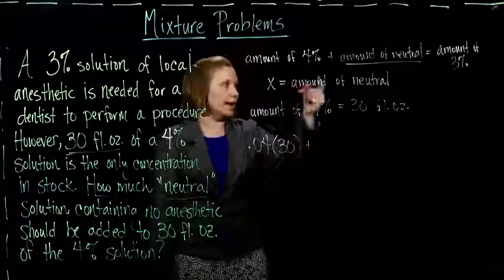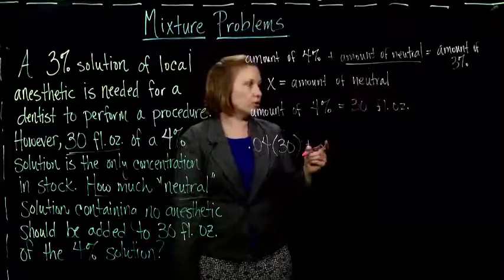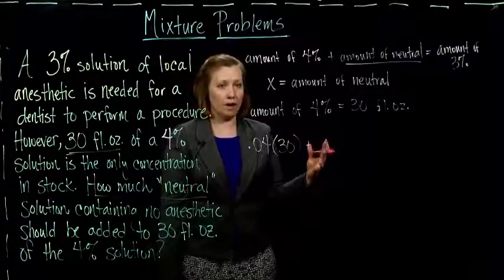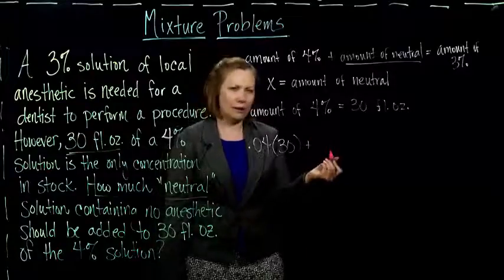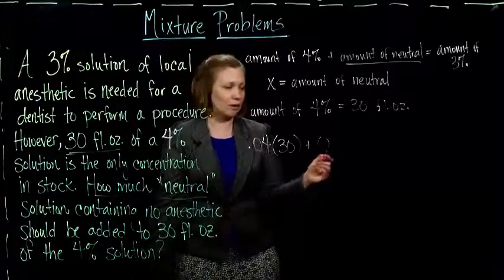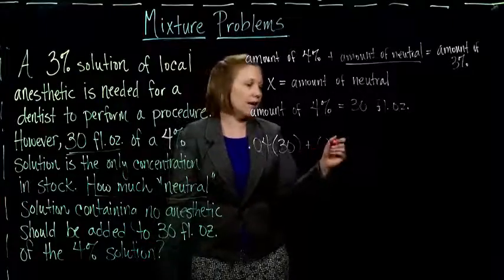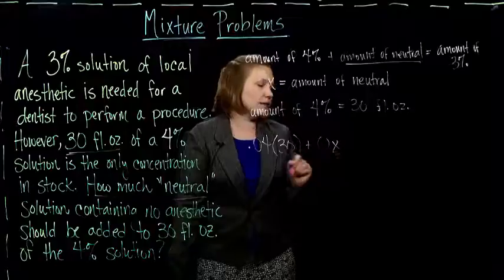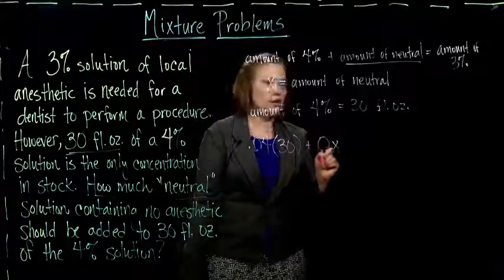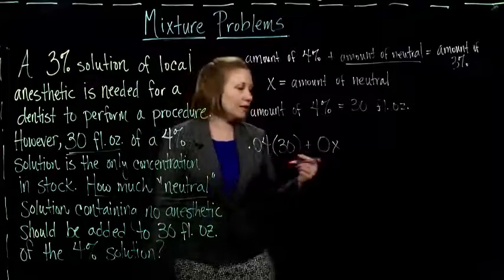Now when I add that to the amount of neutral solution multiplied by its concentration to give me the amount of anesthetic, well, if you think about it, the amount of anesthetic in a neutral solution should be 0. So 0%, you can think of it also as 0% times x. So it sets up really similarly to the last example.